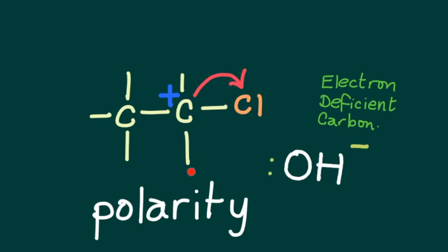A primary halogenoalkane contains two hydrogens. A secondary halogenoalkane would contain a CH3 group here.